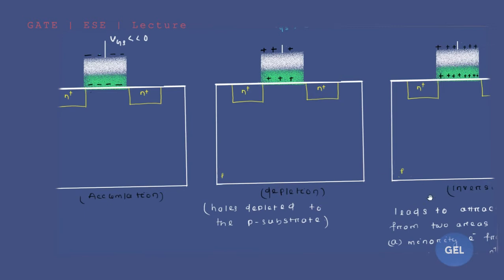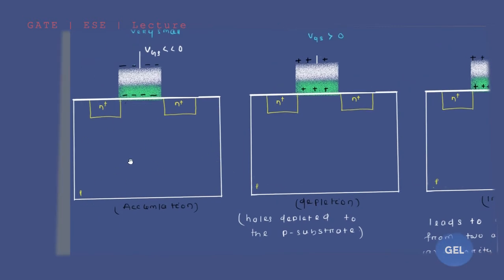The conclusion of accumulation, depletion, and inversion — we will talk about it. Now let's start with accumulation. What is accumulation? In N-channel MOSFET — this is your N-plus.